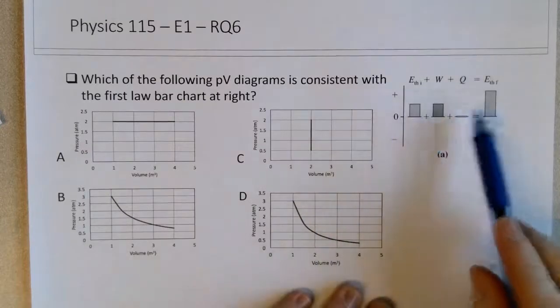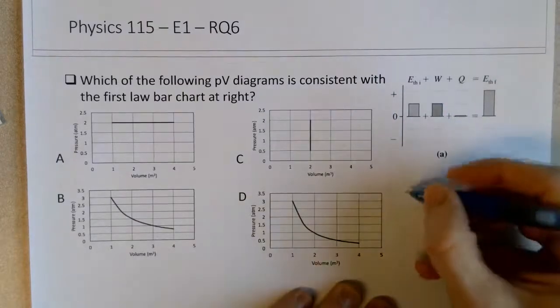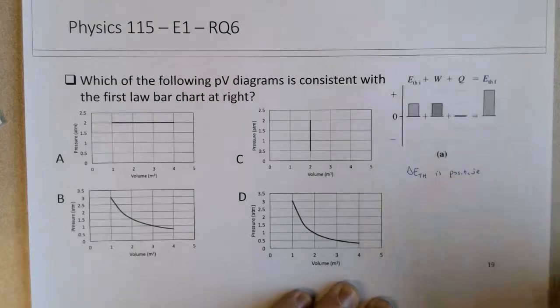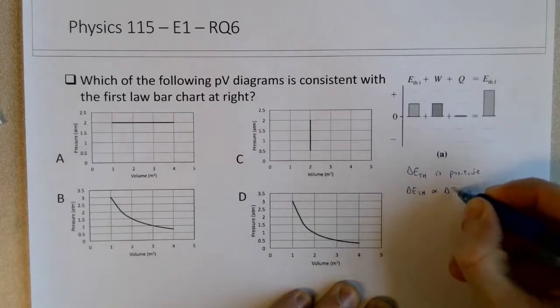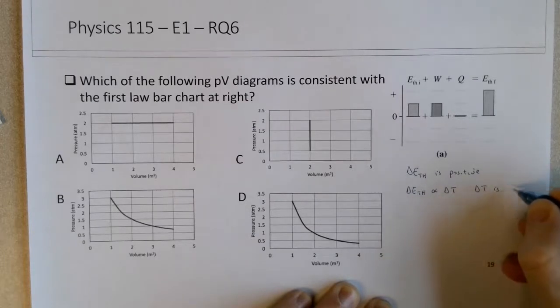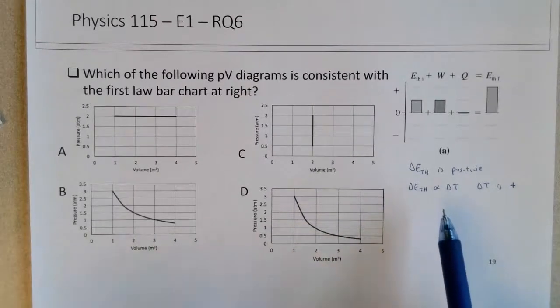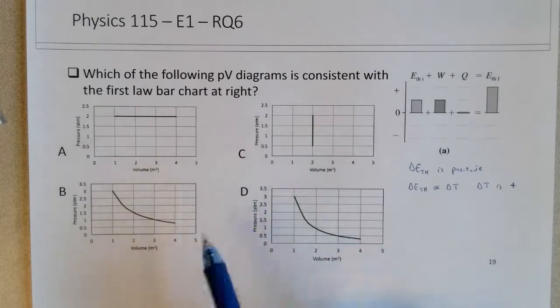What we can see here is that there is a positive change in the thermal energy going from one unit up here to two units on the graph. So I can say that the delta E_TH is positive, so that means that the temperature increases. Delta E_TH is proportional to the change in temperature, so delta T is also positive. An increase in thermal energy has to be consistent with an increase in temperature. And even though the question doesn't state this, assume this process is carried out on a closed container.